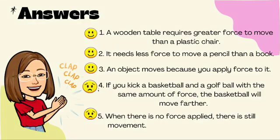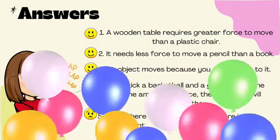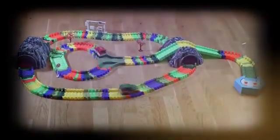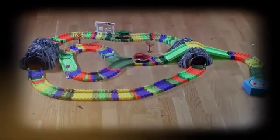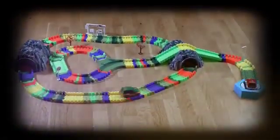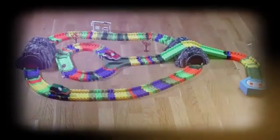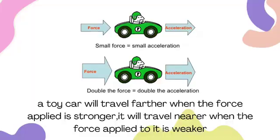Let's check your answers. Did you get all the correct answers? Well, that's great! You have learned in Grade 4 the effects of force applied in the movement of an object. For example, a toy car will travel farther when the force applied is stronger, and in contrast, it will travel nearer when the force applied is weaker. Either the force is strong or weak, the toy car will move because you applied force to it. If there is a force applied, there is motion. You cannot say that an object is in motion without a force or set of forces acting on it.